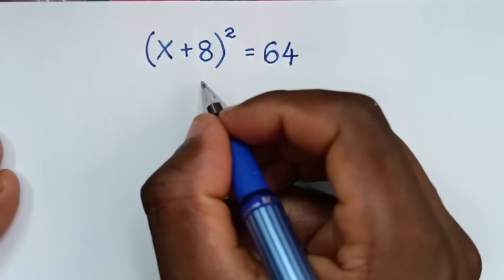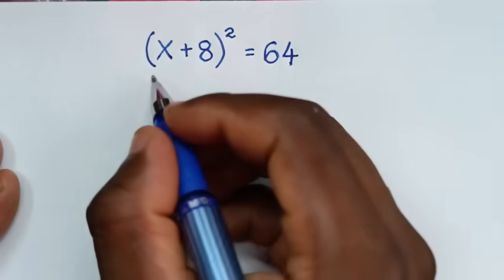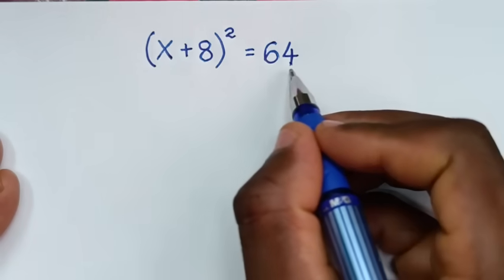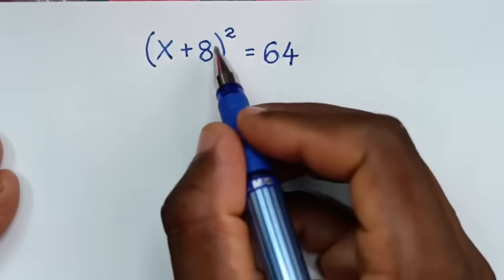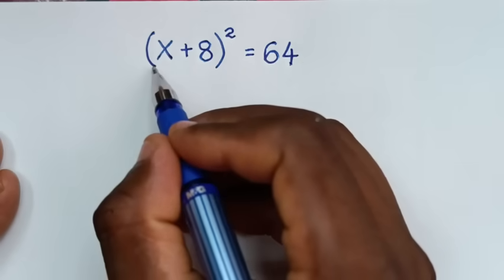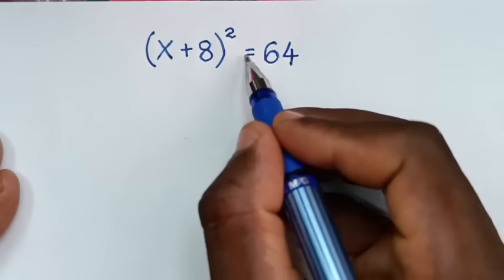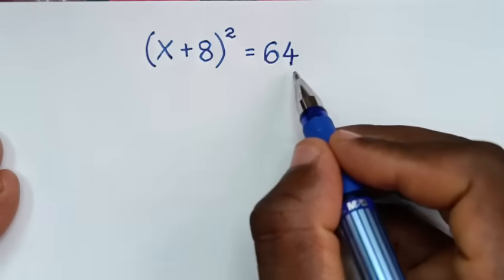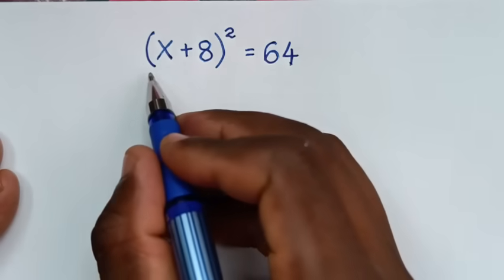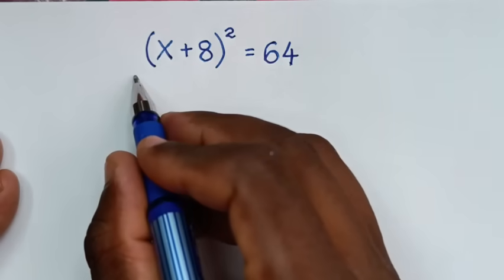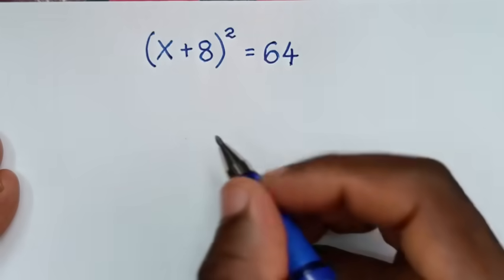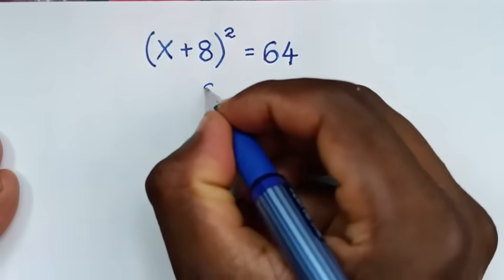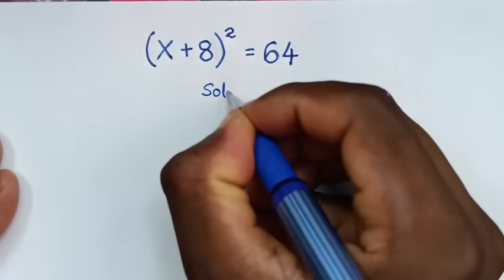Hello, you are welcome to solve this math problem which is (x + 8)² = 64. To find the values of x from this equation.